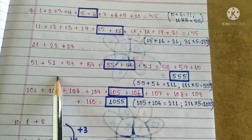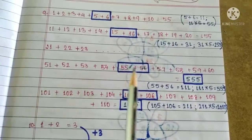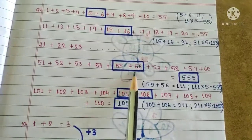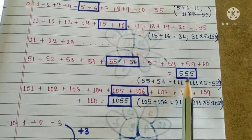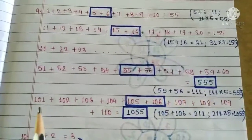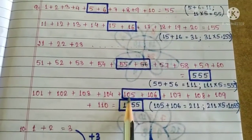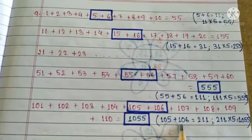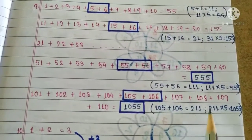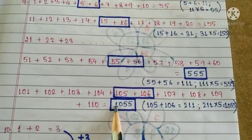So in the next one also, we have the 5th and the 6th digit. 55 plus 56 is 111 multiplied by 5 is 555. Again, the next one, we have the 5th and the 6th digit. 105 plus 106 equals to 211 multiplied by 5 equals to 1055.